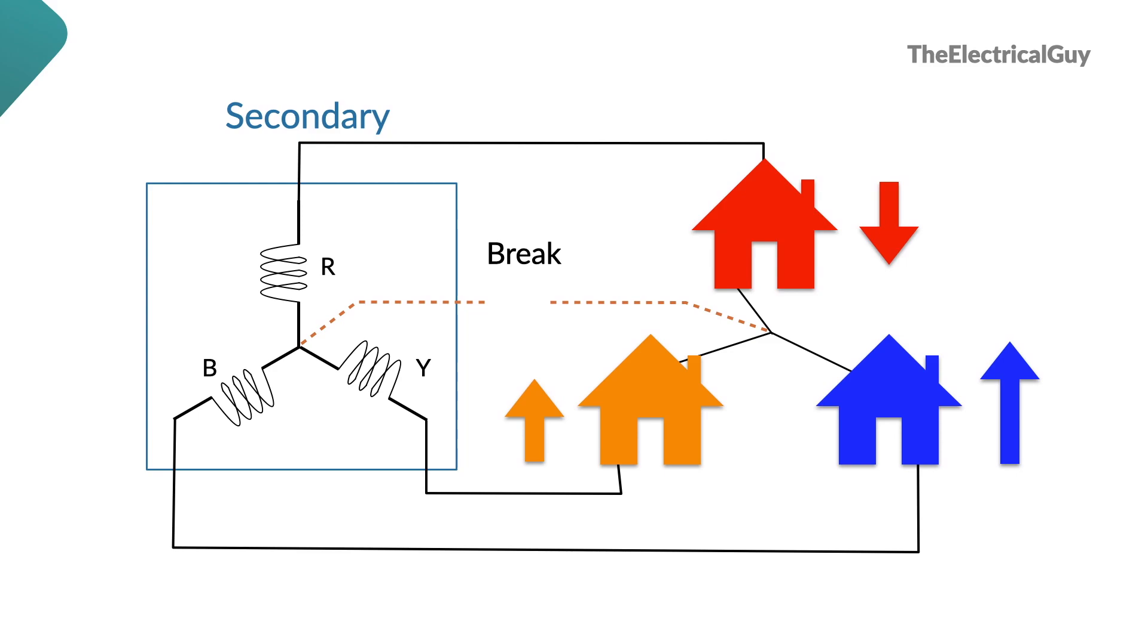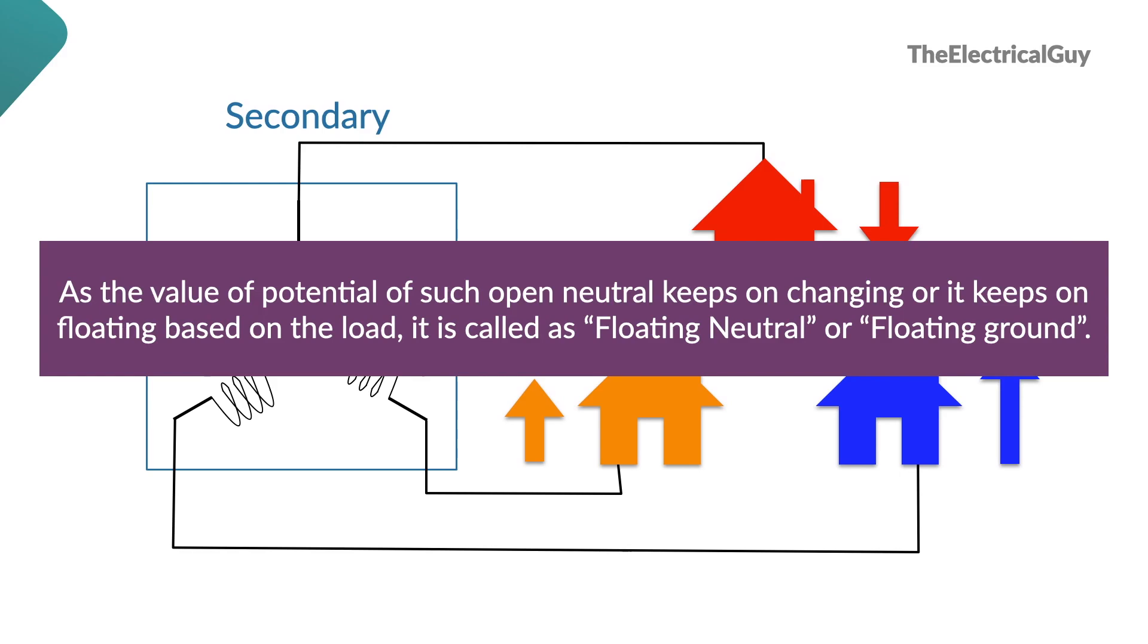Hence, this situation is called floating neutral, or some people also call it floating ground. Floating neutral doesn't mean that the neutral wire floats in air. As the value of potential of such open neutral keeps changing or keeps floating based on the load, it is called floating neutral or floating ground. I'll also show you floating neutral in our simulation in a few minutes, and that's very interesting.